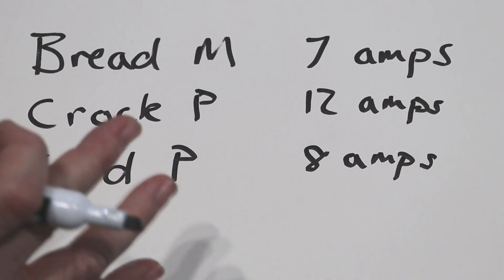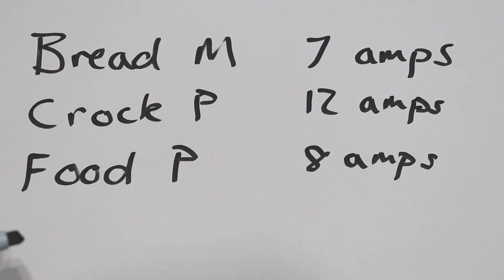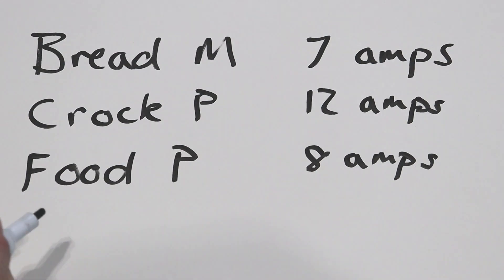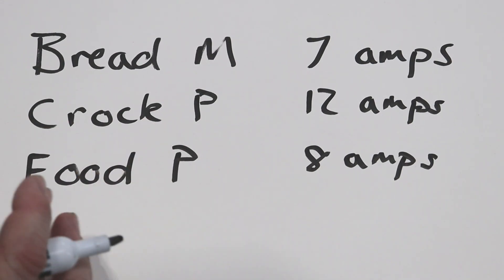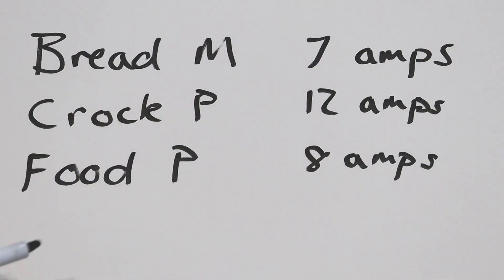So let's just base it off from these three appliances. Let's say worst case scenario, she's going to be using these three appliances at one time. So how many outlets would you put in? If you combine the bread maker and the food processor, you're at 15 amps and on a 20 amp circuit you'd be fine. The crock pot would have to be by itself because it's at 12 amps.